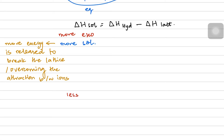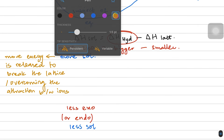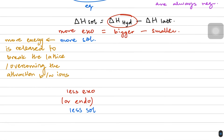If the solution enthalpy is less exothermic, or even endothermic, it means there is less solubility. For more exothermic solution enthalpy values, the hydration enthalpy should be a bigger value and the lattice enthalpy should be a smaller value. Remember, all these values are always negative. So bigger hydration and smaller lattice means more exothermic solution and better solubility, while smaller hydration and bigger lattice means less exothermic or even endothermic — and therefore less soluble.